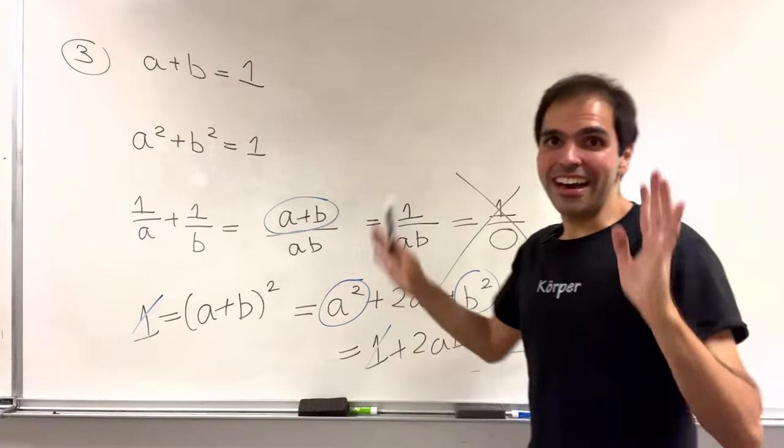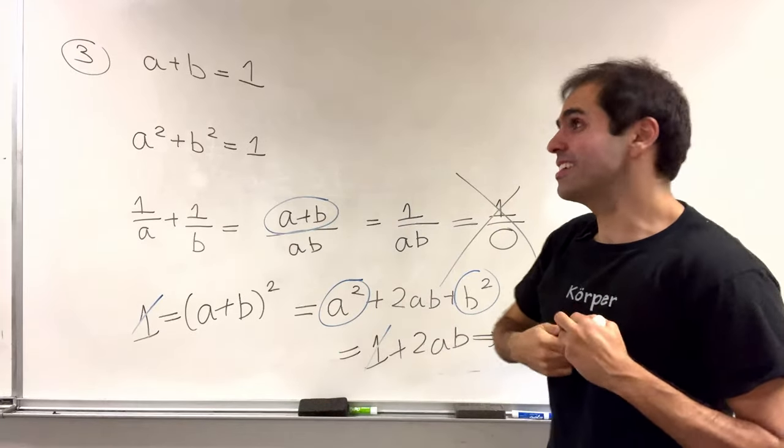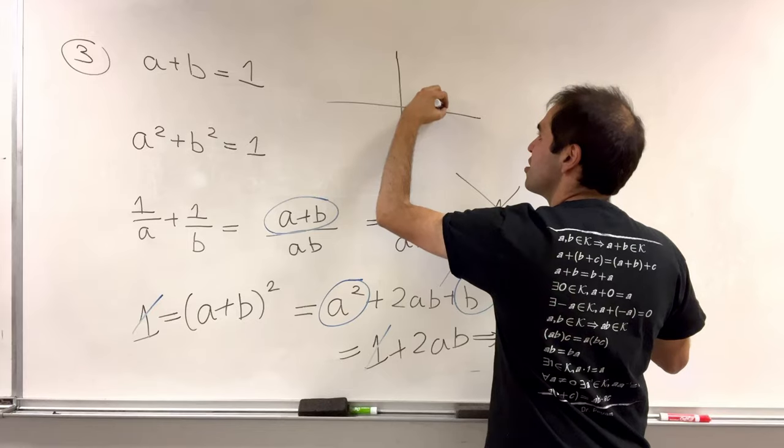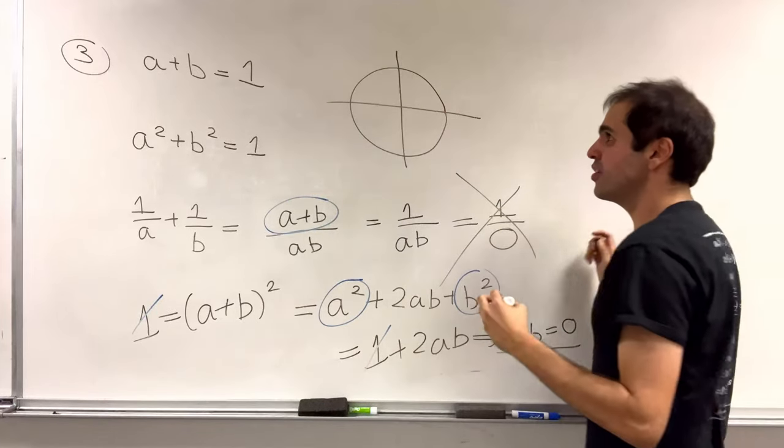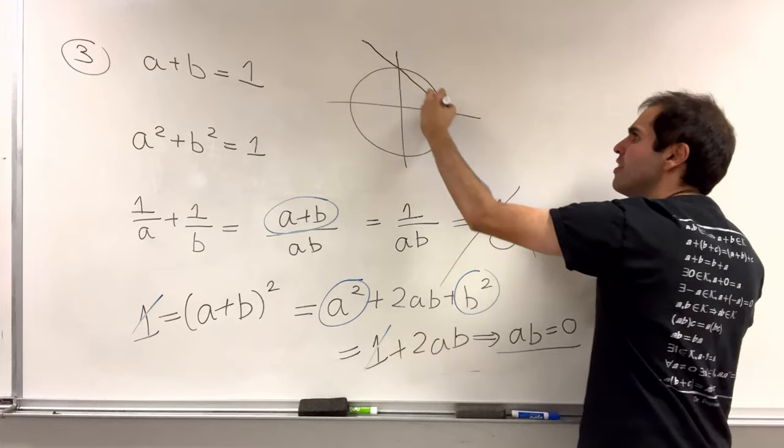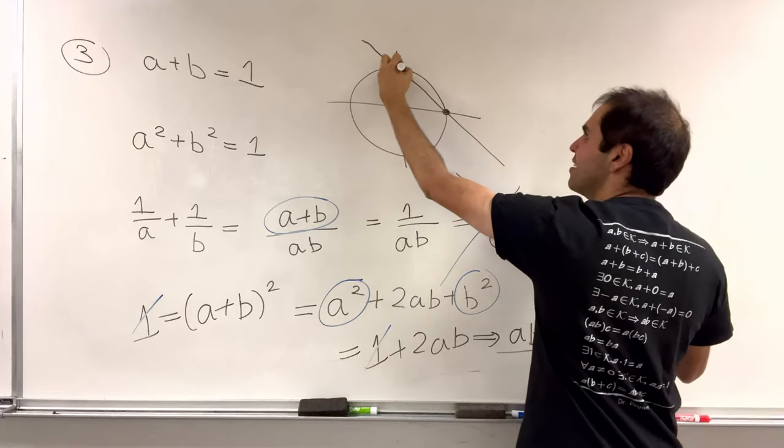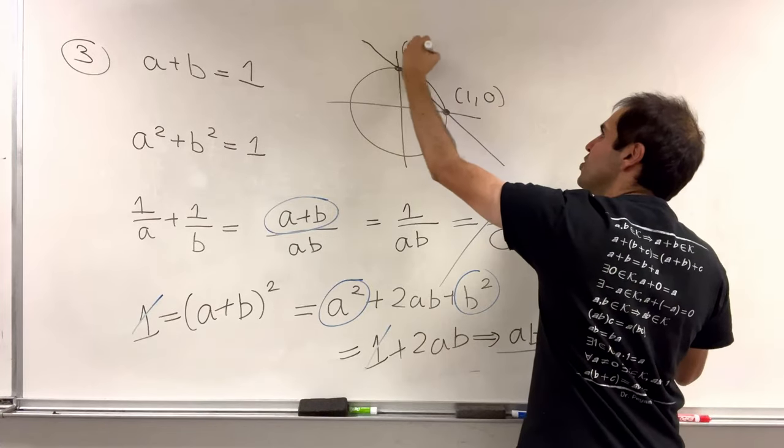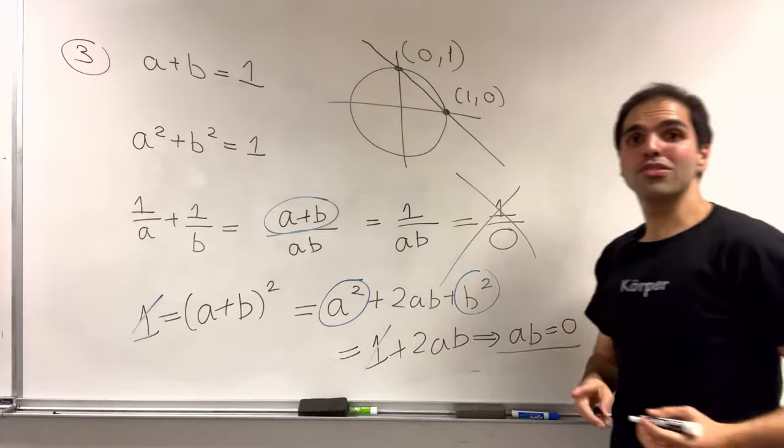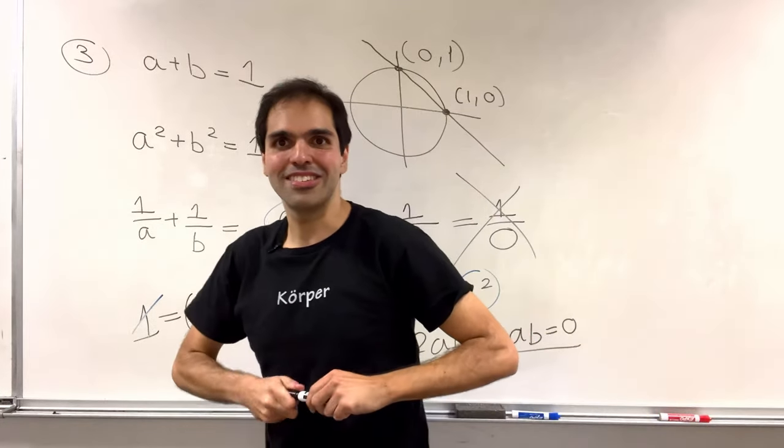I know, very sad, but let me give you a cute geometric interpretation of this. So a squared plus b squared is 1, that's a circle. a plus b is 1, that is a line with x and y intercept 1. So, in fact, in this case, the solutions are just 1, 0, and 0, 1, which, of course, the sum of reciprocals here doesn't exist.